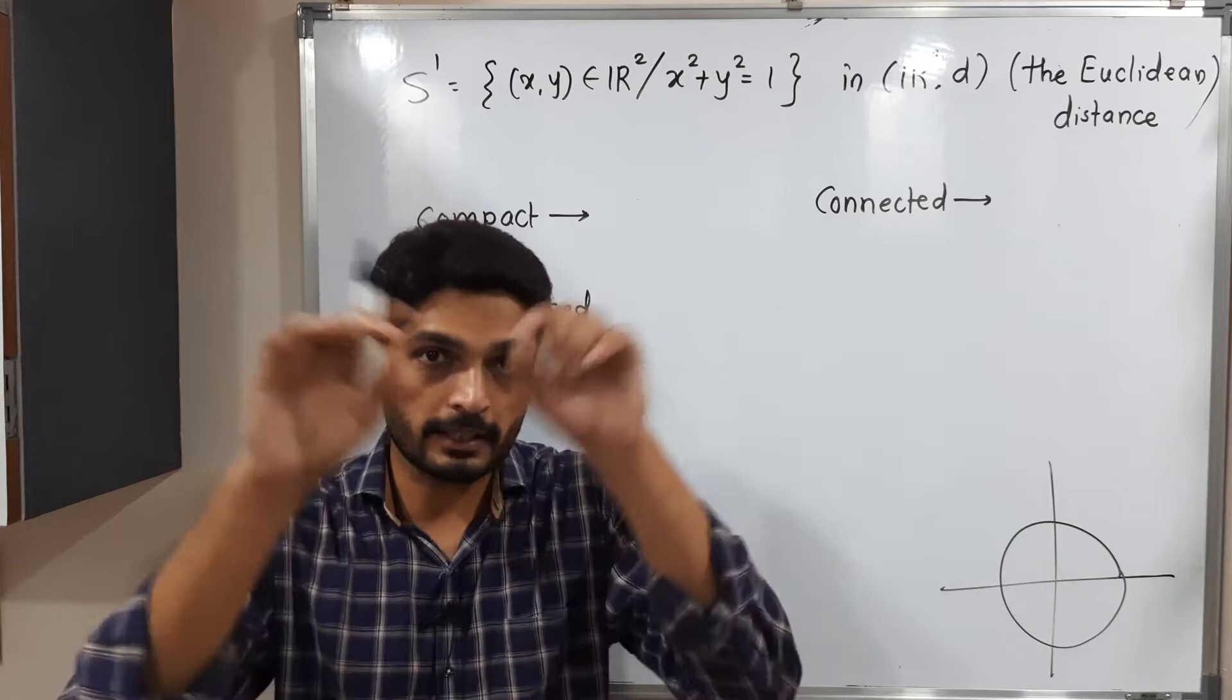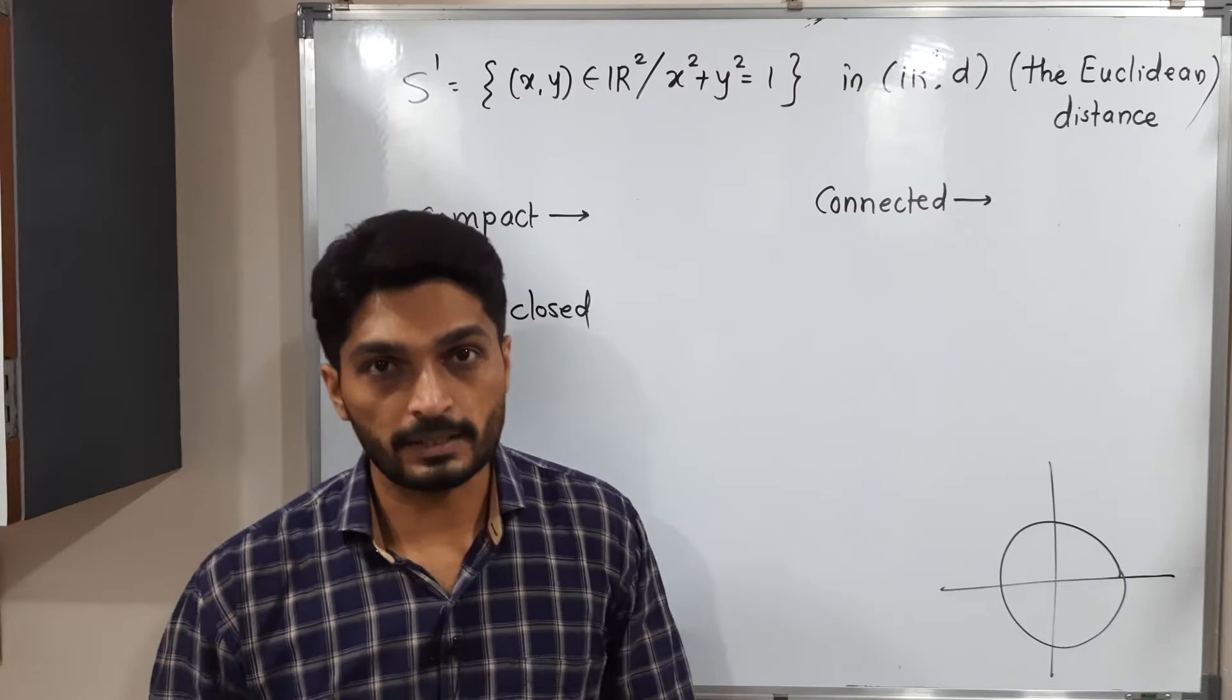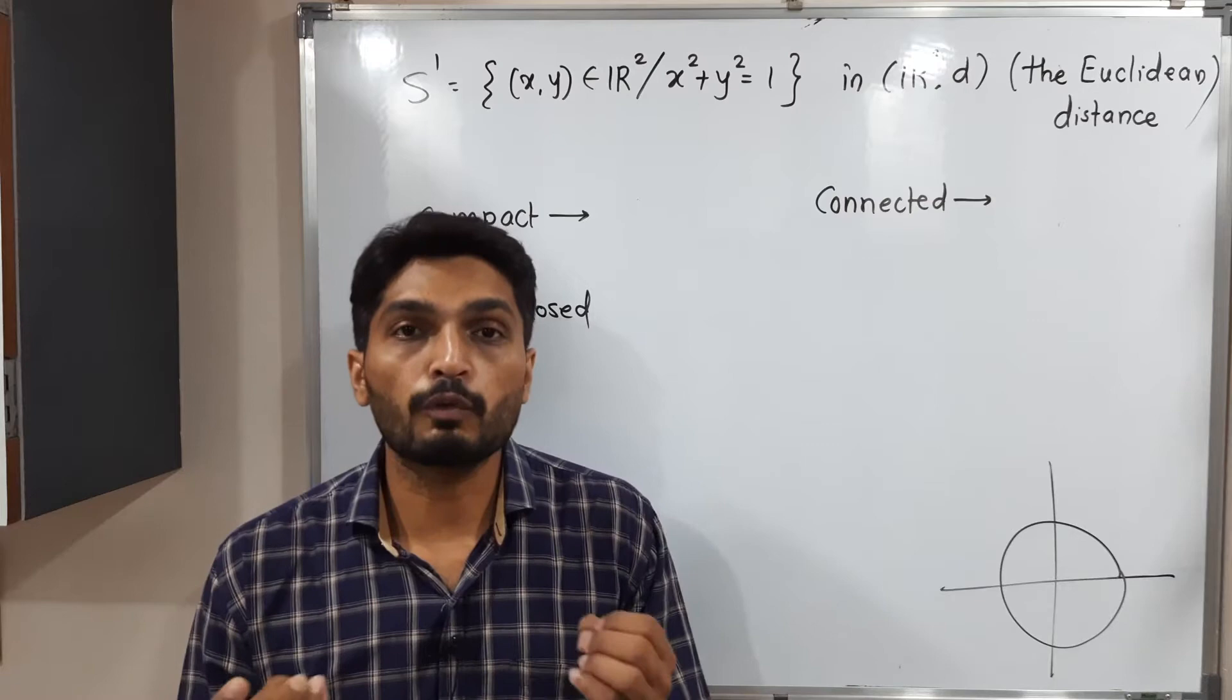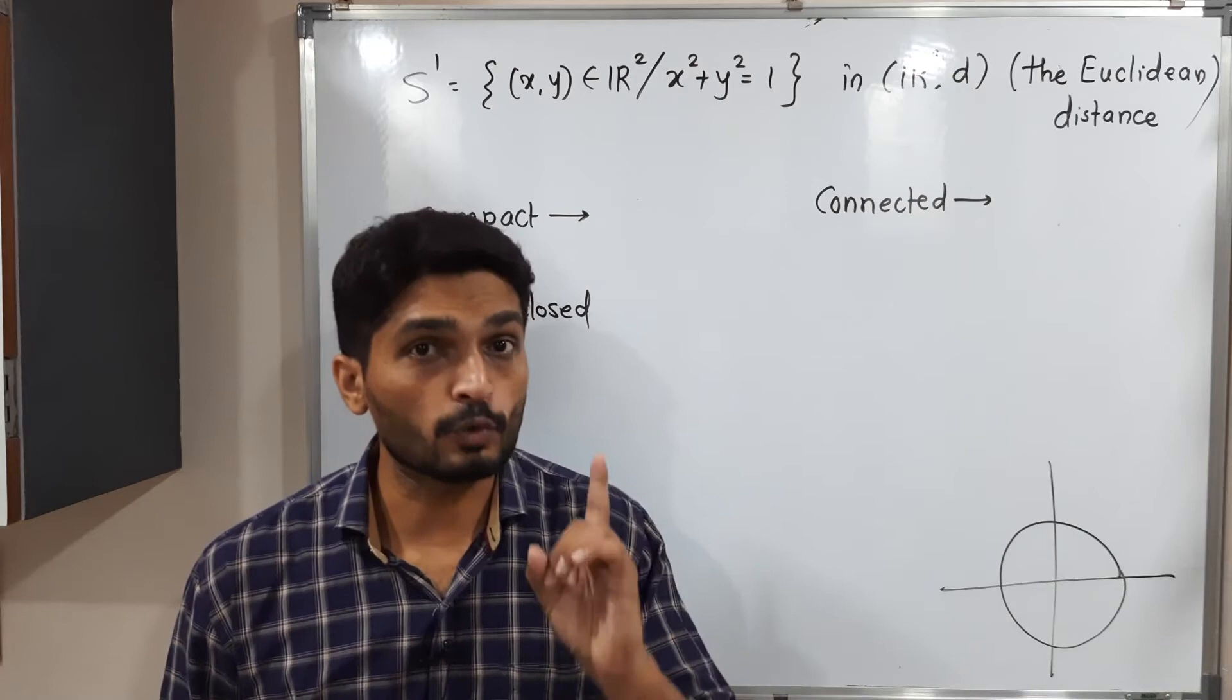Interior part is an open ball, so that's why it is an open set. If you talk about exterior part, then also it is an open set. Arbitrary union of open sets is open. So that's why its complement will be open.